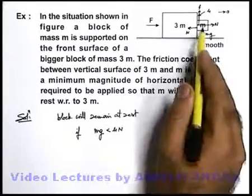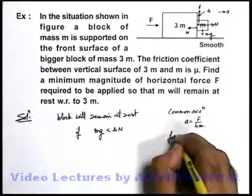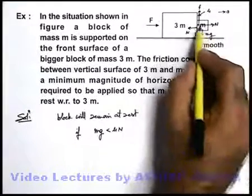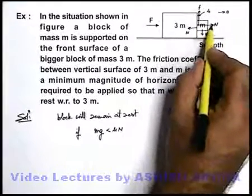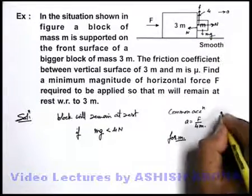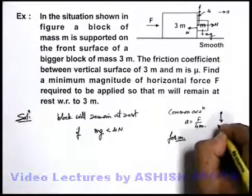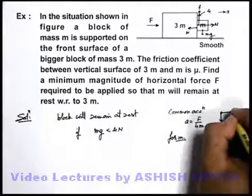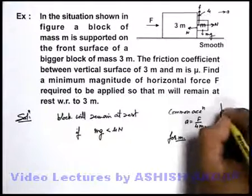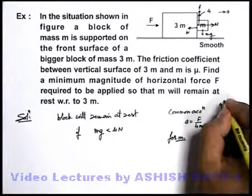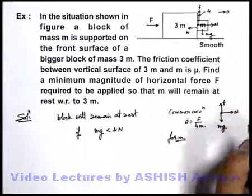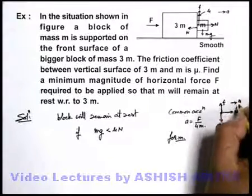And for this small m block we can write: for small m, the only horizontal force acting on it is N. If we just draw the free body diagram of this small m we can see, in downward direction it will experience mg, in forward direction it will experience N, and in upward direction the friction is acting on the block. It is moving forward with an acceleration a.